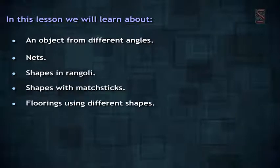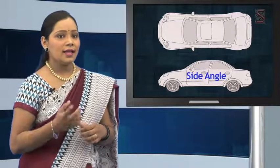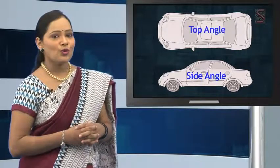Look at this painting — what do you think it is? Difficult to tell, right? Now look at this painting. You can easily tell what it is. Yes, it is a car! These are two pictures of the same object but taken from different angles — one from the side angle and the other from the top angle. You can also see a picture of a house taken from different angles.